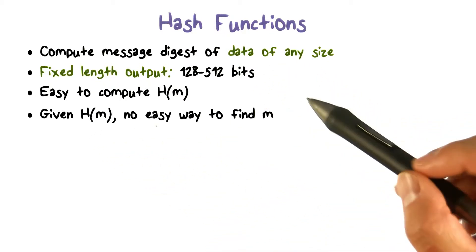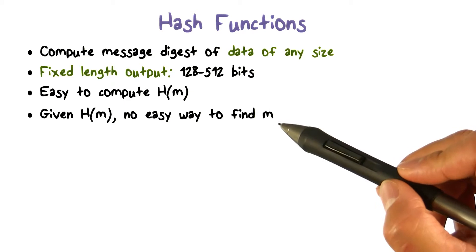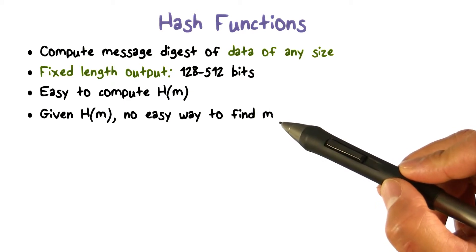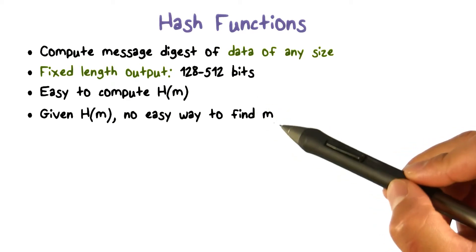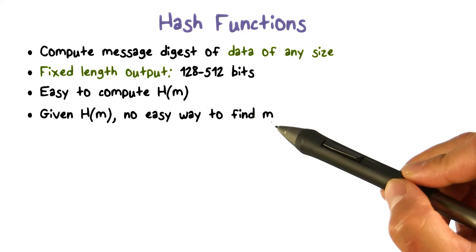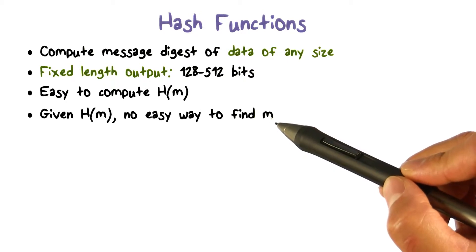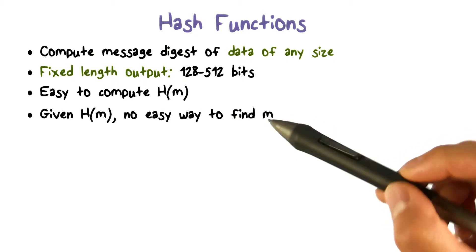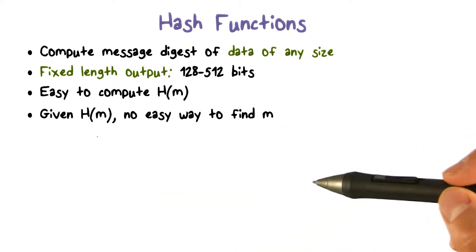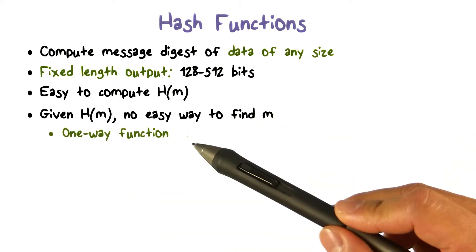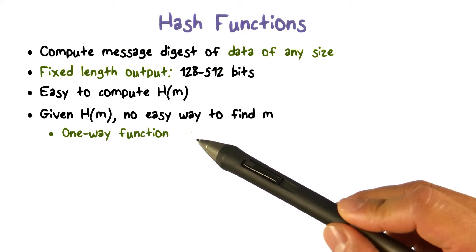Second, for a given hash value, it should be computationally infeasible to find the original message M such that the hash of M equals that given hash value. This so-called one-way property is very important.